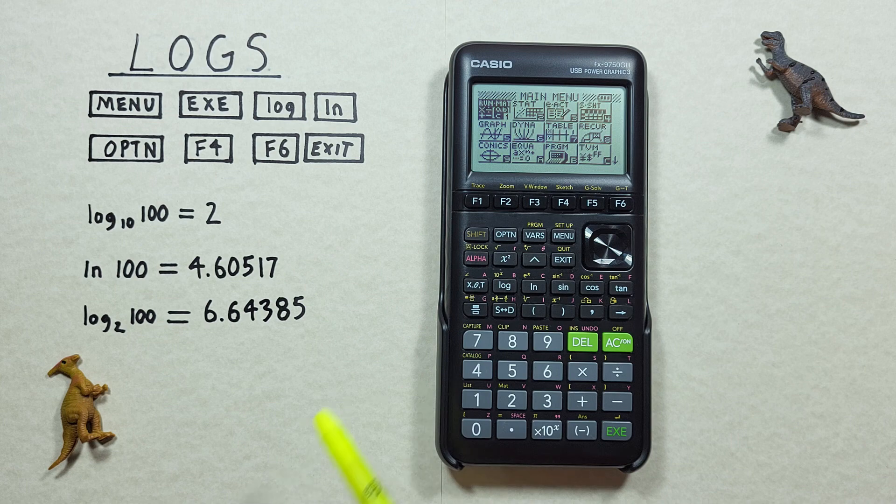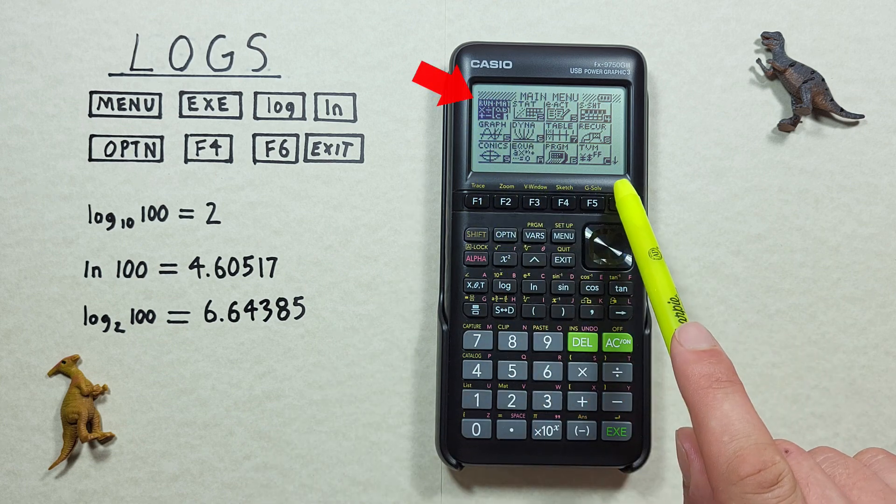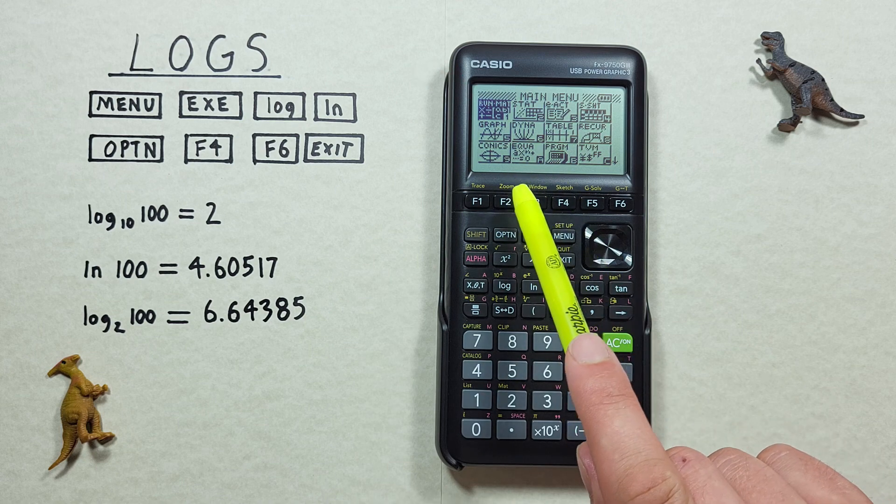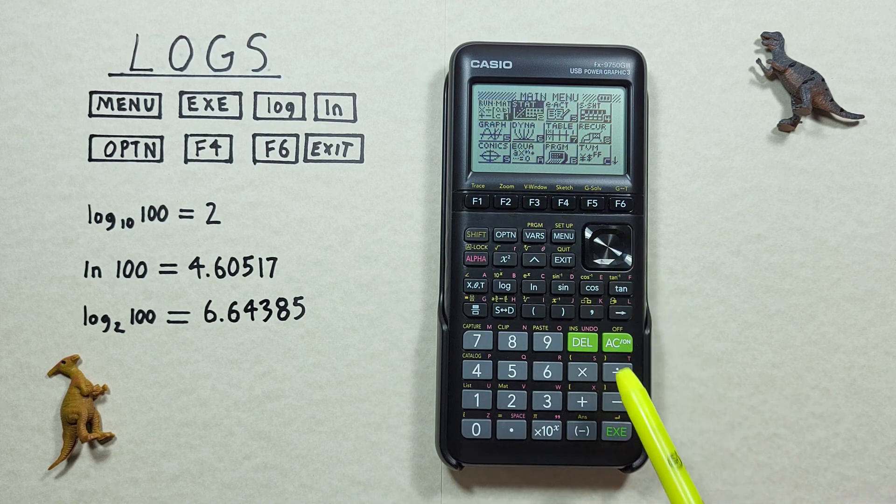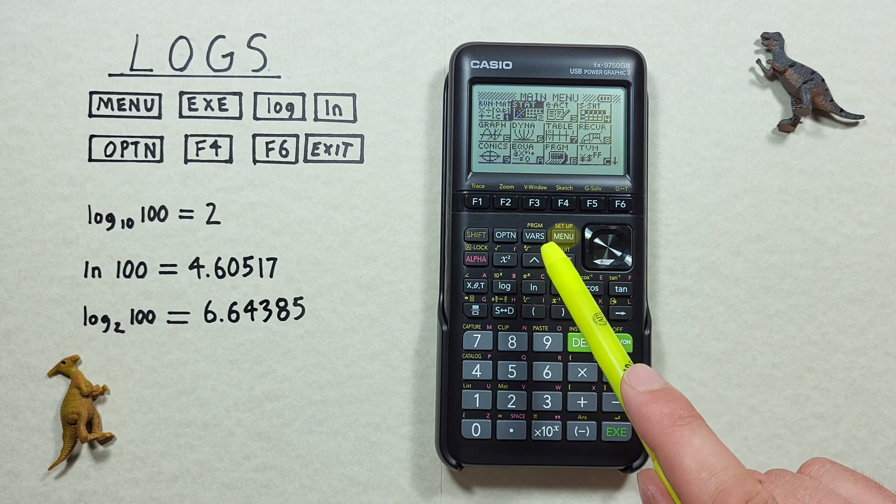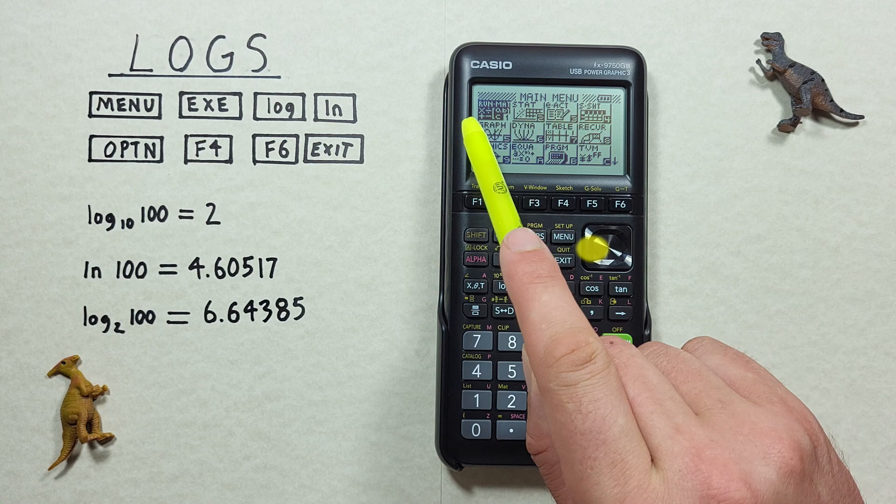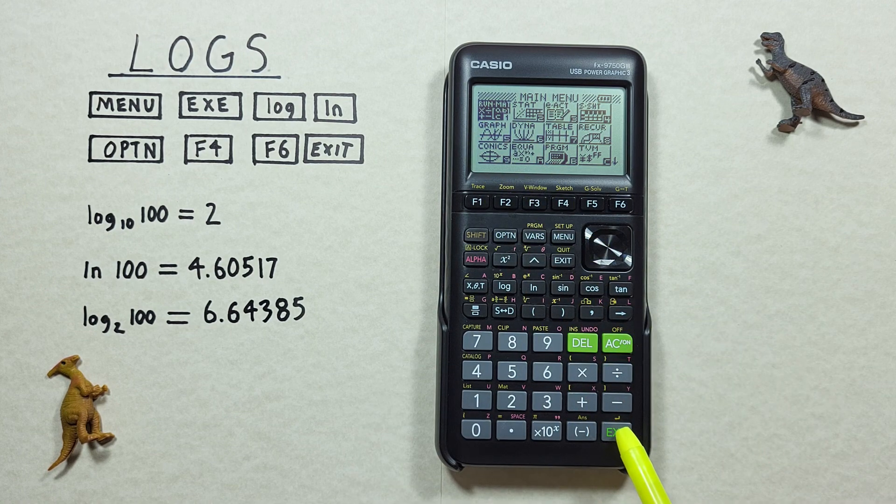For this example, we're going to use the run mode, which we can get to from this menu here. If we're not in this menu, and in, say, the stat menu, we can get here by pressing the menu, scrolling over, and then selecting the run mode, and hitting the EXE key.